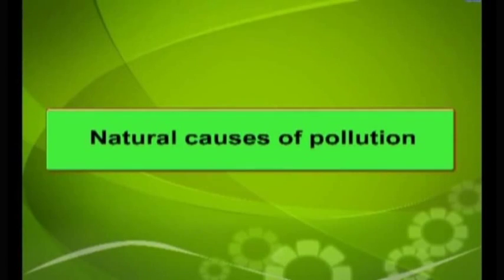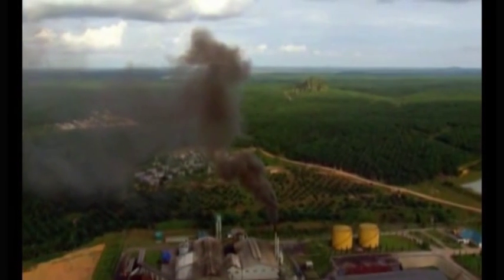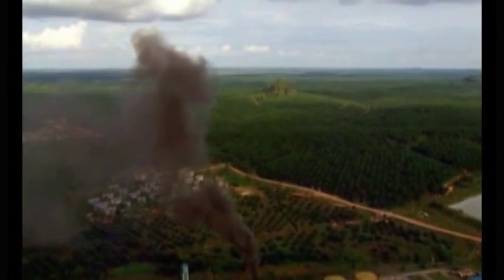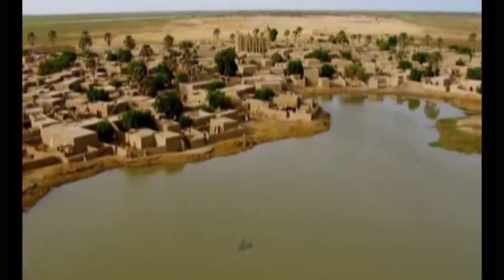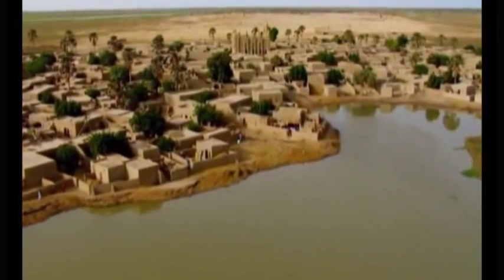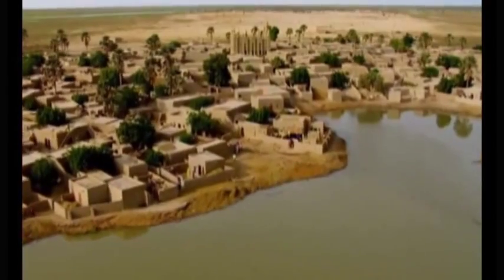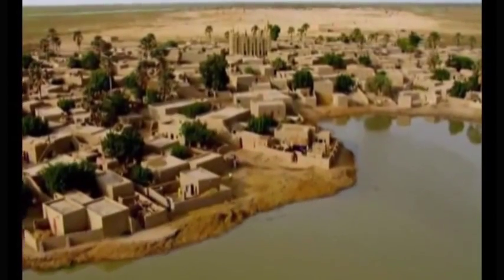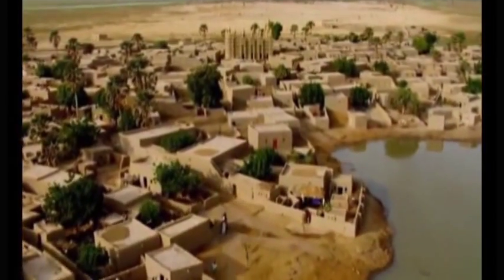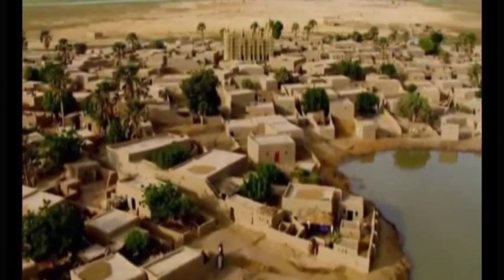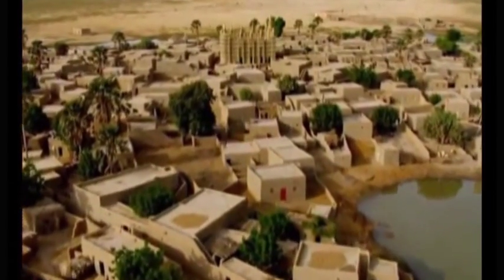Let us see the natural causes of pollution. Some activities in nature can pollute the air, water and land. Man has no control over these natural activities, and this kind of pollution was present even before the existence of the human race or technological advancements made by man.